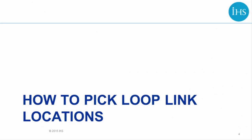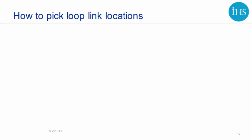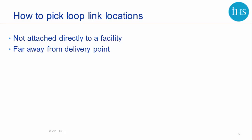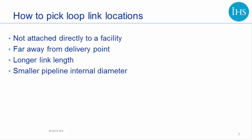Let's quickly review one more time how we might think about locations to move loop links to. Remember, you do not want a designated loop link to be directly attached to any facility — only attach it to another node, not to a compressor or delivery point. We want our designated loop link to be as far away from the delivery point as possible. We would also like to pick longer links as opposed to shorter ones. Try to select locations where you have a smaller pipeline diameter. And finally, look for areas where you have minimal elevation change when relocating a loop link.